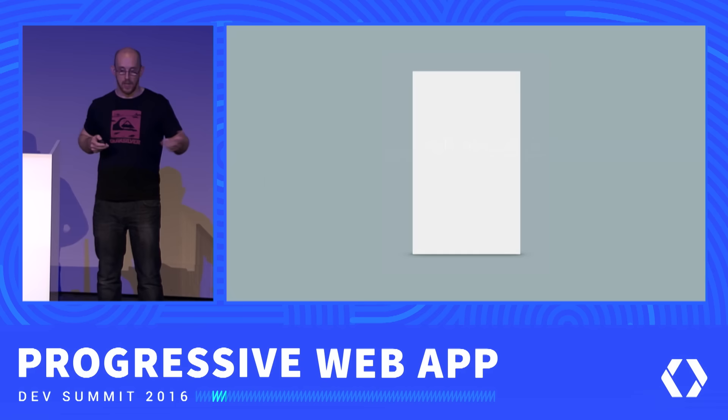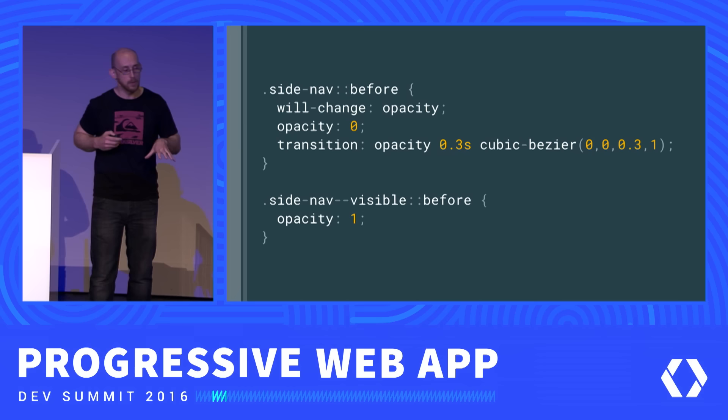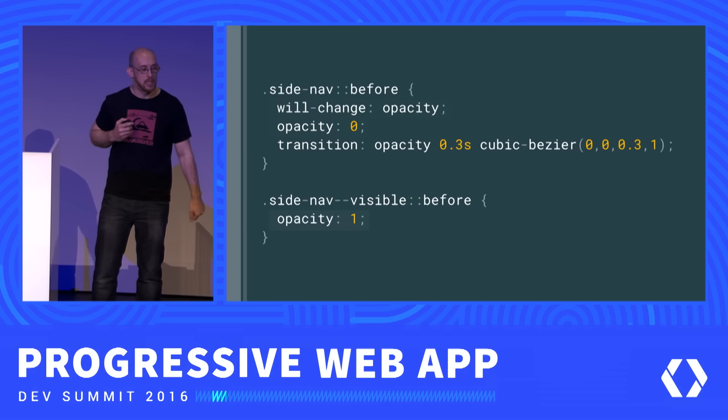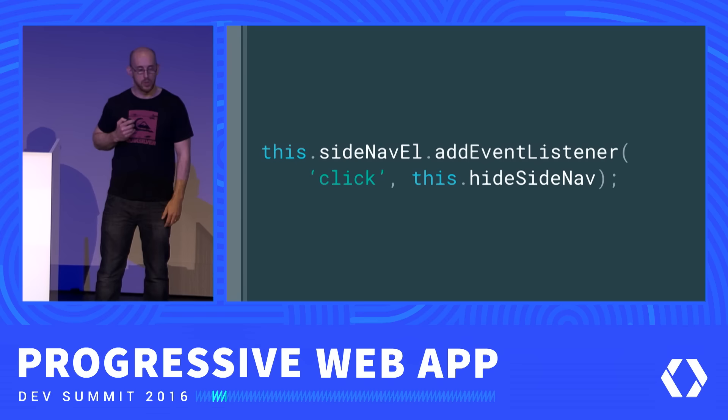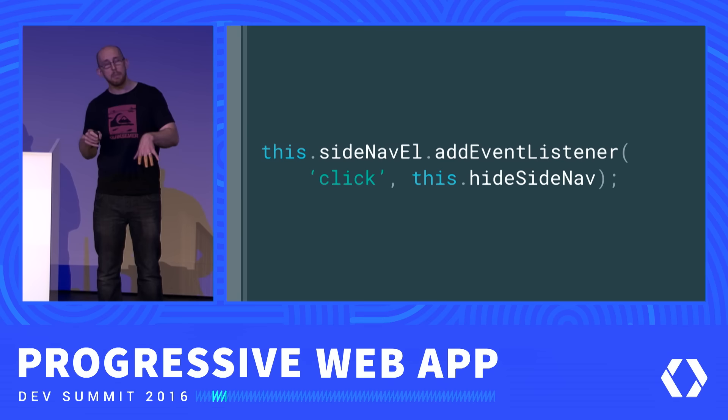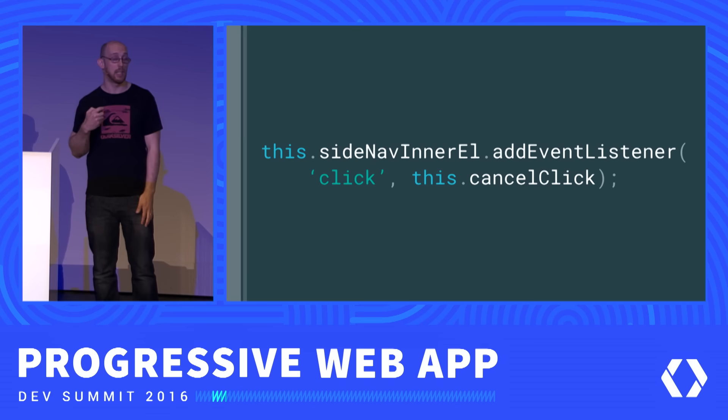We get something like this where it slides in from the side. That semi-transparent black background uses will-change: opacity, going from an opacity value of 0 to 1. Getting rid of it is just the reverse — we remove that class and everything goes back. I put a hide-side-nav handler on the containing element so if you click anywhere it hides. And to prevent that from firing when you click something in the side nav itself, we add a handler with stopPropagation.